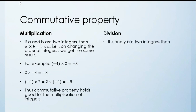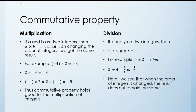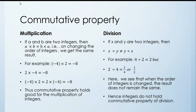Division. If x and y are two integers, x divided by y is not equal to y divided by x. For example, 4 divided by 2 gives 2, but 2 divided by 4 gives 2/4, which simplifies to 1/2. Here 1/2 is not an integer. When the order of integers is changed the result does not remain the same. Hence integers do not hold the commutative property of division.